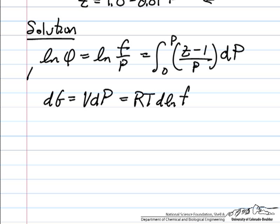So I'm going to work with this relation, the log of the fugacity over pressure, integral from 0 to 30 bar, z minus 1. We can see up here, z minus 1 is just minus 0.01 pressure.